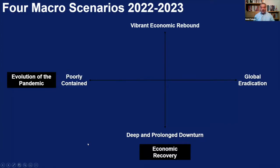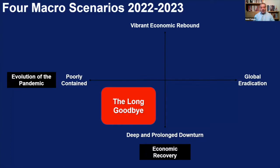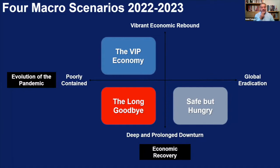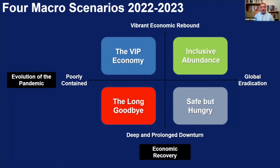The second driving force is the nature of the recovery — from a deep and prolonged downturn to a vibrant rebound. Running through the four scenario names: a poorly contained pandemic with a deep downturn we're calling 'The Long Goodbye'; global eradication but still a downturn we call 'Safe but Hungry'; a vibrant economic rebound but the pandemic continues we're calling 'The VIP Economy'; and where we get both eradication and a vibrant rebound we're calling 'Inclusive Abundance.'